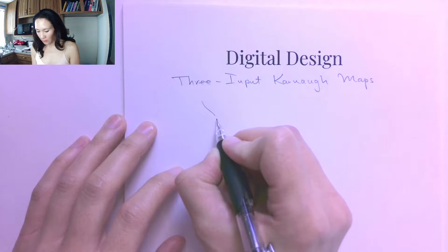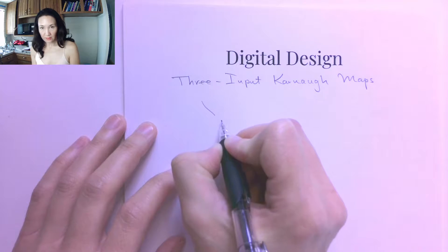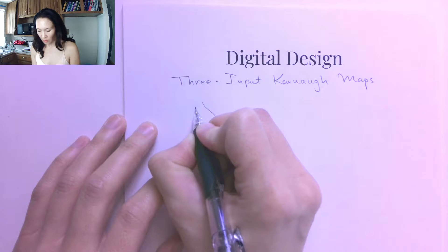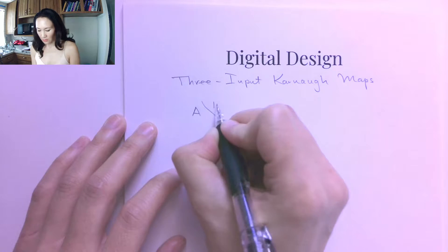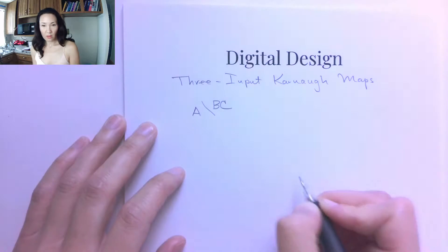So just like for the two input Karnaugh map, I'm going to draw this diagonal line here that's going to separate my inputs. And what I do is I put the first input to the left and I put the second and third on the right.